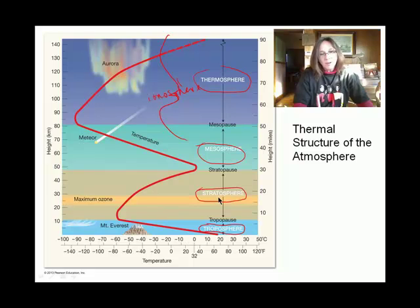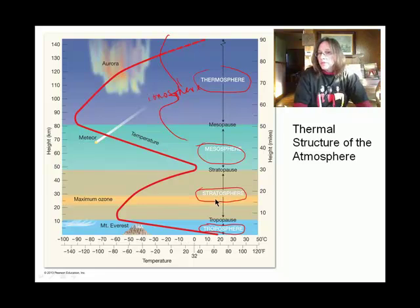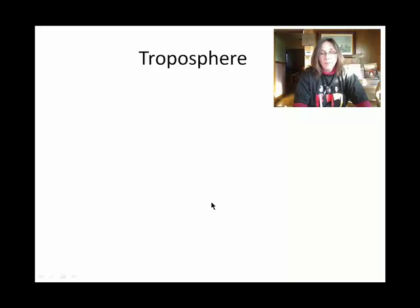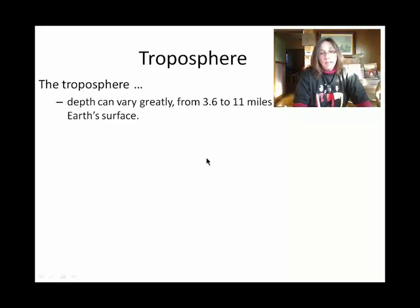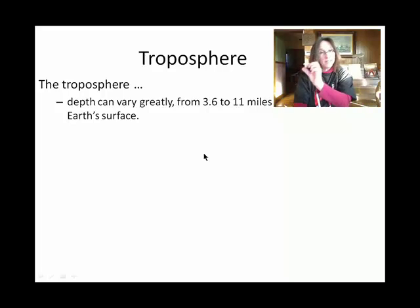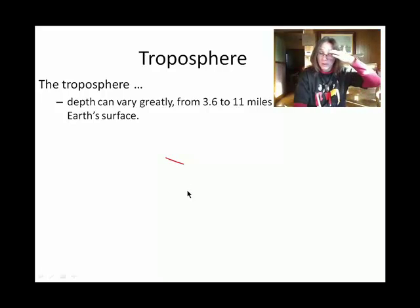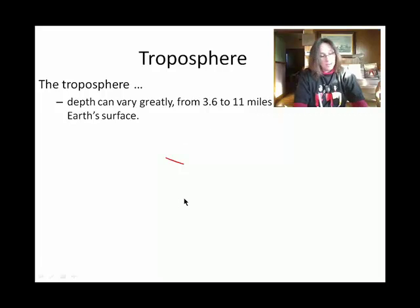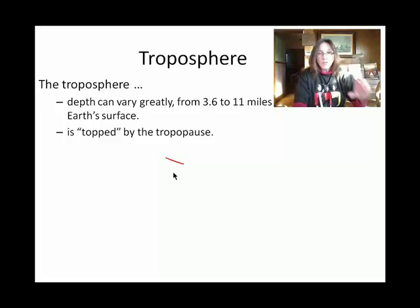So the troposphere — after we're done talking about the Earth's atmosphere in its entirety, most weather actually occurs in the troposphere, so we'll spend a lot of time in this course talking about it. The troposphere is thickest near the equator and thinnest near the poles. I have a homework question about that. The troposphere is also the thinnest of all four layers of the Earth's atmosphere.